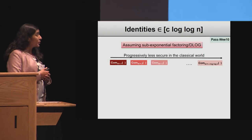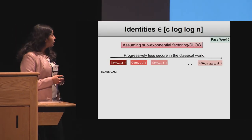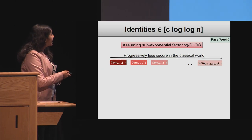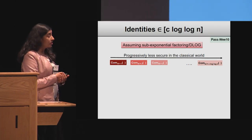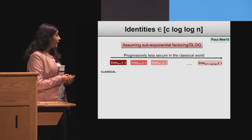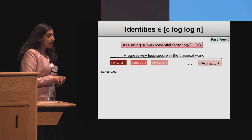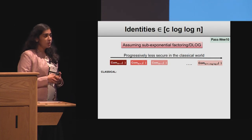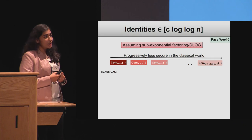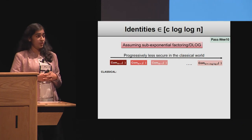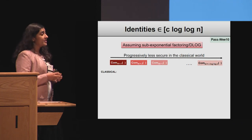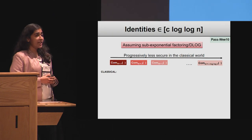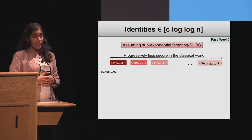To get non-malleable commitments secure for c log log n identities, we start with a technique of Pass and V, who showed it is essentially possible to use complexity leveraging to get a sequence of commitments — c log log n in number — that are progressively harder than the others.